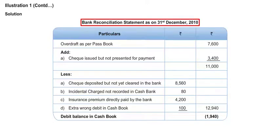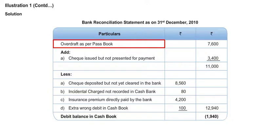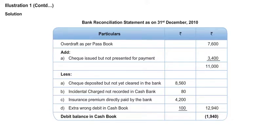Bank reconciliation statement as on 31st December 2010 — that will be your heading. The starting point is overdraft as per passbook: 7600. Here they have given us overdraft as per passbook and we are supposed to arrive at the cashbook balance. So we need to keep in mind this is about overdraft, and accordingly the plus and minus signs will change.